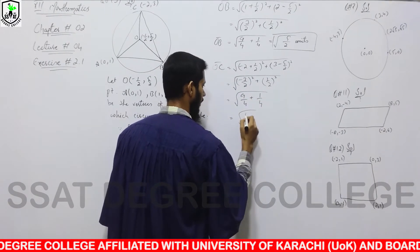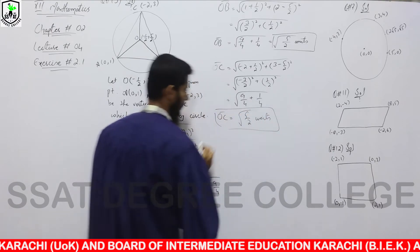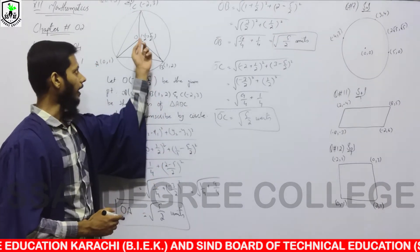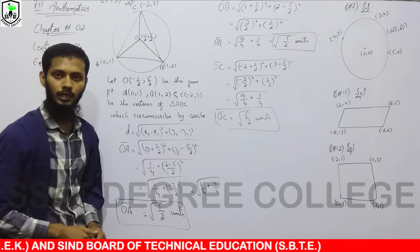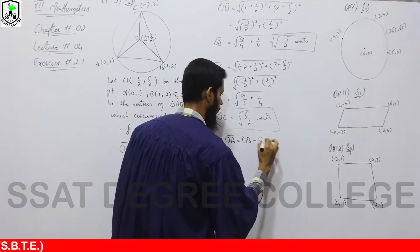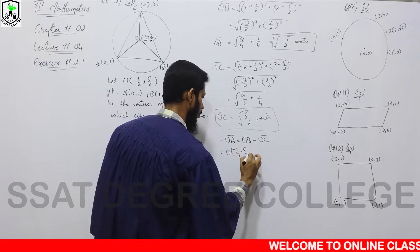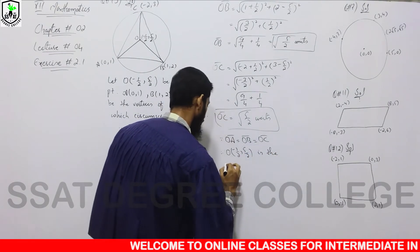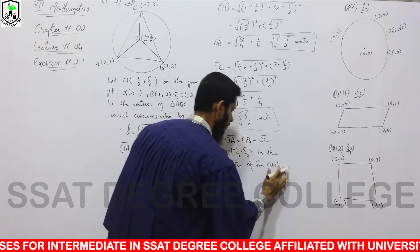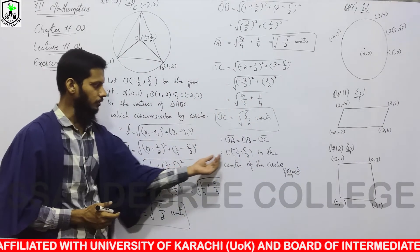This is always constant. So, OA = OB = OC = √(5/2) units. Therefore, O(−1/2, 5/2) is the center of the circle. Proved. This center is proved.